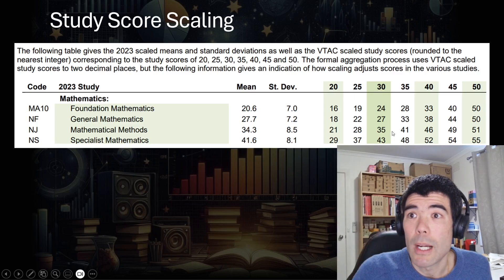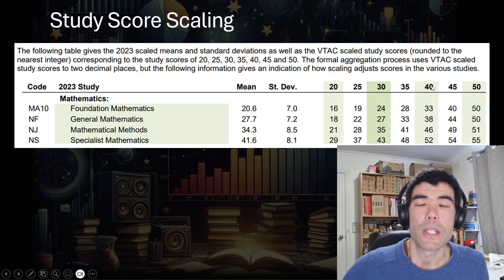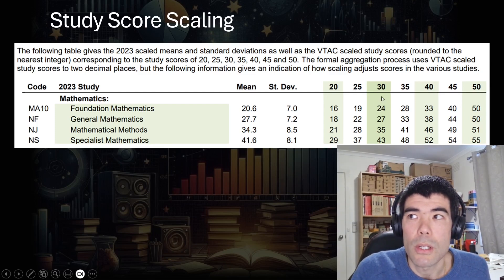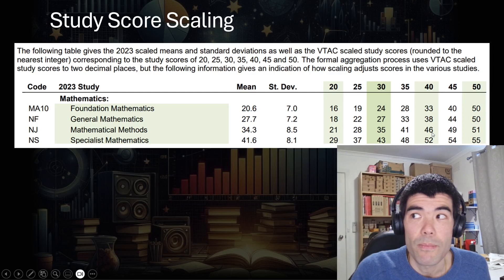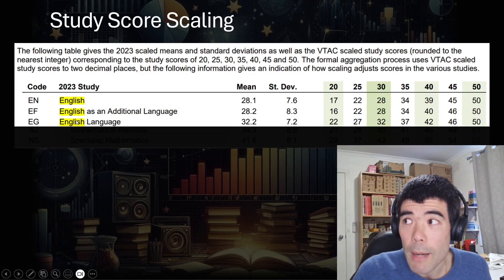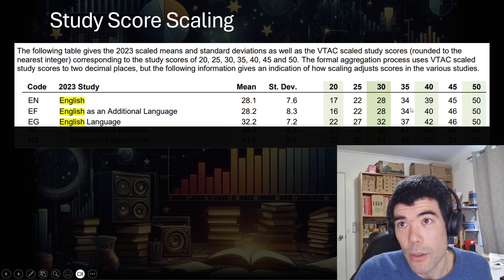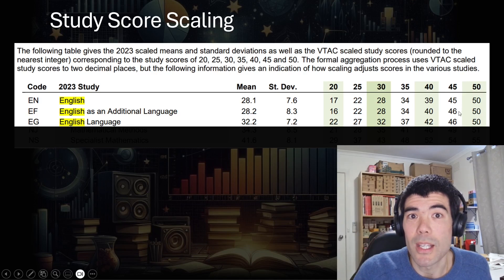In maths methods, 30 went up to 35, and 50 slightly went up. They produce the scaling report across a different range of study scores, to show that the scaling is not always applied equally. So if we look at methods, for example, 30 goes up to 35, but 40 went actually up 6 points to 46. Another example of that, if we look at the Englishes. And if we look at the English as an additional language, 35 went down to 34, 30 went down to 28, but 45 actually went up to 46.